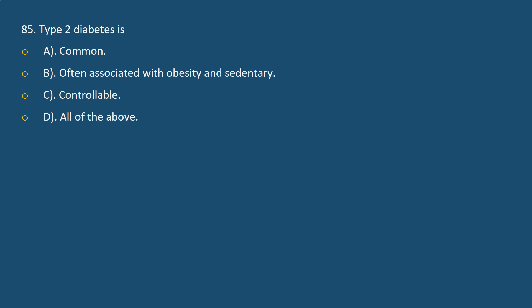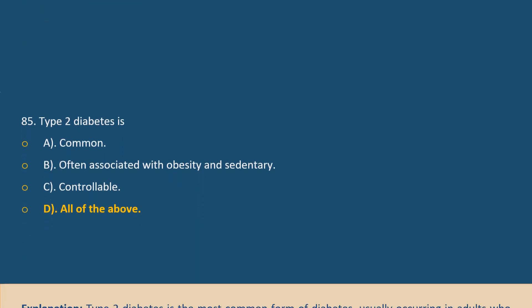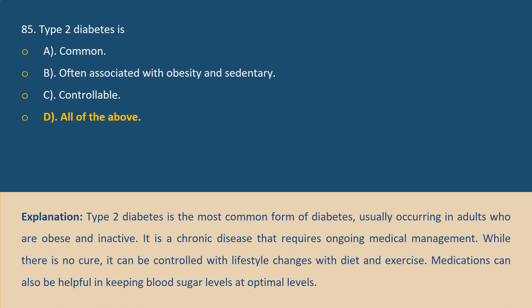Question 85: Type 2 diabetes is: A. Common, B. Often associated with obesity, C. Controllable, D. All of the above. Answer D. Explanation: Type 2 diabetes is the most common form of diabetes, usually occurring in adults who are obese and inactive. It is a chronic disease requiring ongoing medical management. While there is no cure, it can be controlled with lifestyle changes including diet and exercise. Medications can also help keep blood sugar levels at optimal levels.